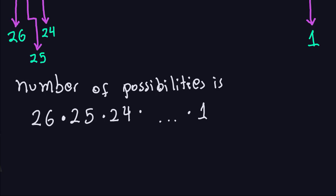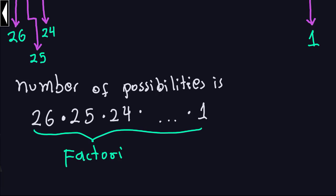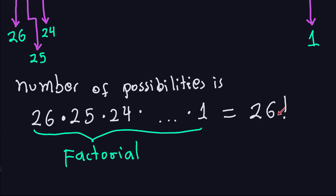One important thing to mention: whenever you have this kind of multiplication — starting with a number and multiplying by the one below it, decreasing by 1 each time — this is what we call the factorial. This is denoted by the number followed by an exclamation point. So 26! means you multiply all the numbers from 1 through 26. That's just notation — a shortcut to write down this product without spelling it out every time.